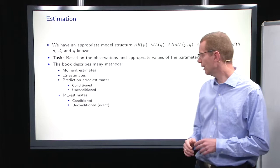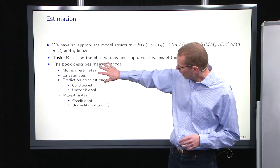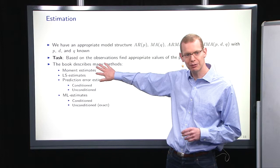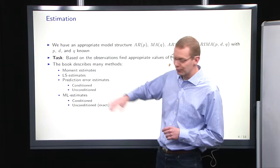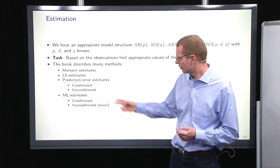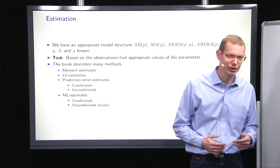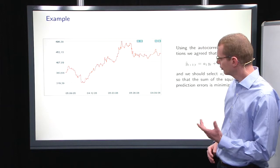In the book — Time Series Analysis by Henrik Madsen — we have a lot of different methods. We have the moment estimates that we won't spend much time on, but we'll get back to that. Then we have the least squares estimates that we have used a lot of time on already, and we will continue doing that. Prediction errors, both conditioning and unconditioned. And then maximum likelihood, which is my preferred. So we'll save the best for last.